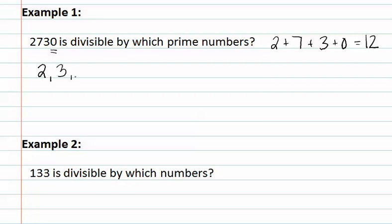Next, we determine if 5 divides into this number. Remember, for 5 to divide into the number, the last digit needs to be a 5 or a 0. Since the last digit is a 0, we know that 5 divides in.